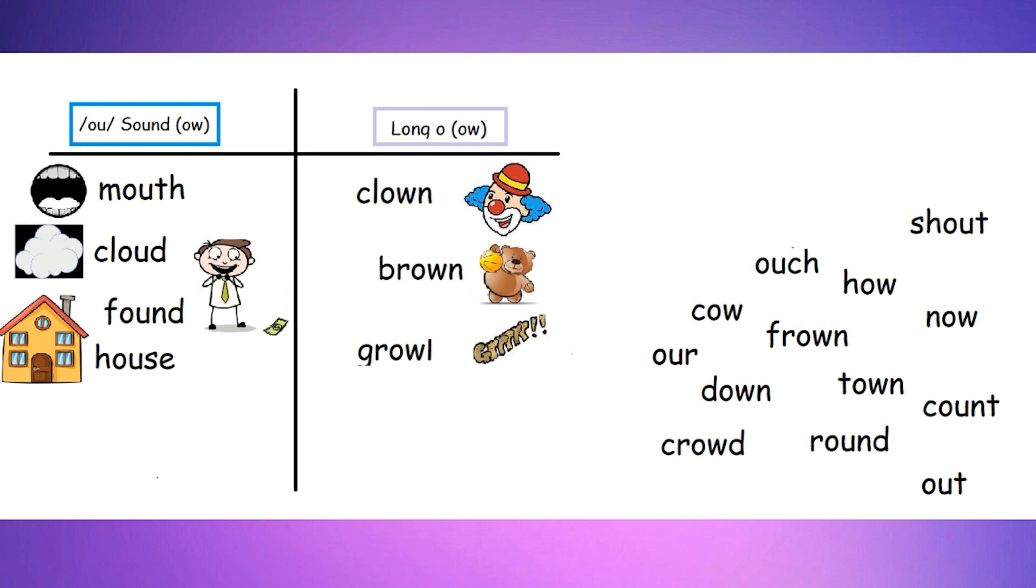All right, last word that we're going to work on today is going to be town. Remember, we see OW in there. So it will go with our long O for OW. And what do you think a town might be? Well, it's comprised of stores, houses, you name it. And I bet you live in a town.